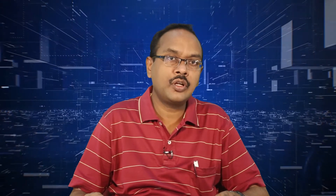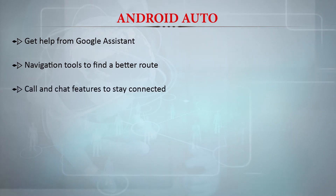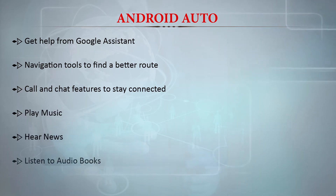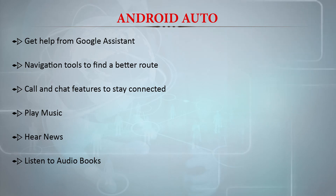Now the first product we will look at in detail is Android Auto. Android Auto is software that connects a car with various tools so that people sitting inside the car can avail many services while in the automobile. As part of Android Auto, it is possible to get help from the Google Assistant, use navigation tools to find better routes, use call and chat features to stay connected, play music, hear news, and also listen to audio books — which enables meaningful education while driving or travelling.